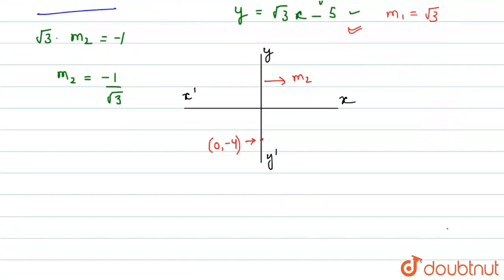So, the equation is... the general form is y - y₁ = m(x - x₁). Now, we are putting the values. We will get y - y₁, which is -4, equals m, which is -1/√3, times x - x₁, which is 0.